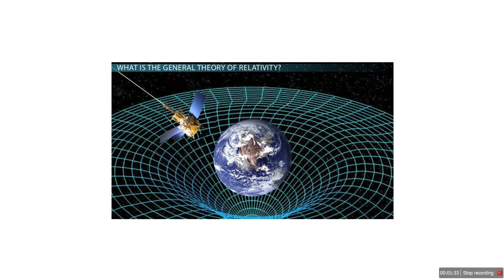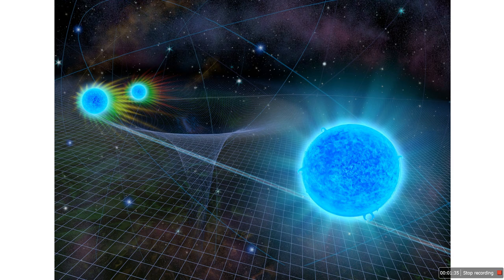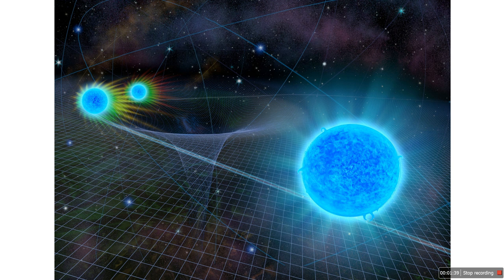Gravity also affects time. And here's where things get even wilder. Einstein showed that gravity doesn't just bend space, it also bends time. Near a massive object like a planet or star, time slows down. This is called time dilation due to gravity.